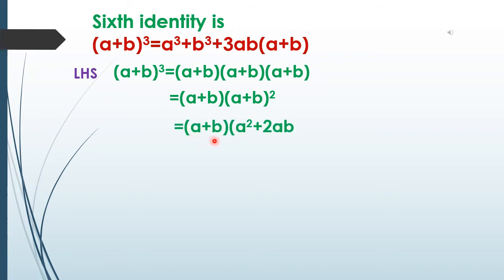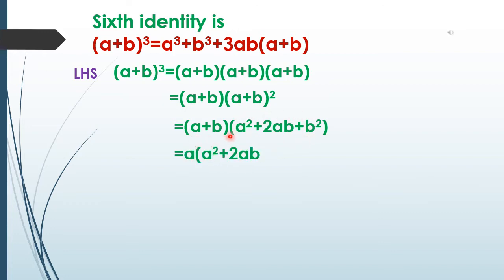So we can write (a + b) × (a² + 2ab + b²). Now we have two expressions; we multiply a to this expression and b to this expression, giving a(a² + 2ab + b²) plus b(a² + 2ab + b²).